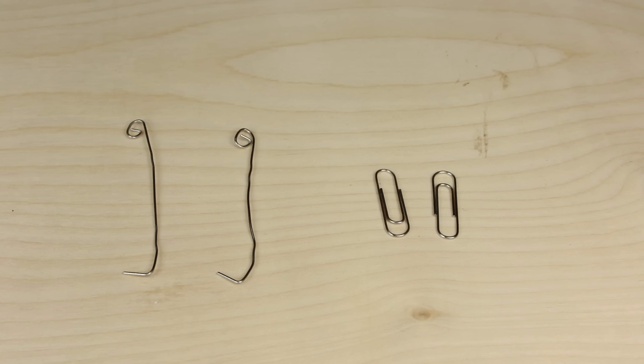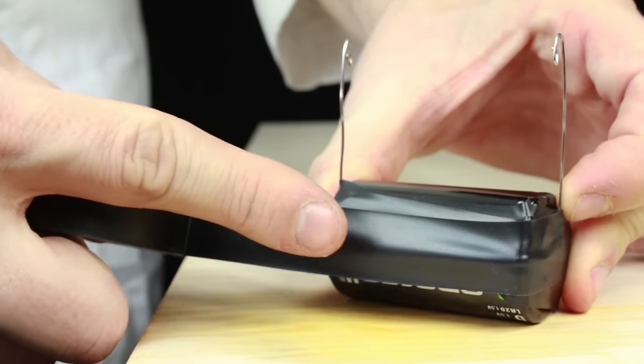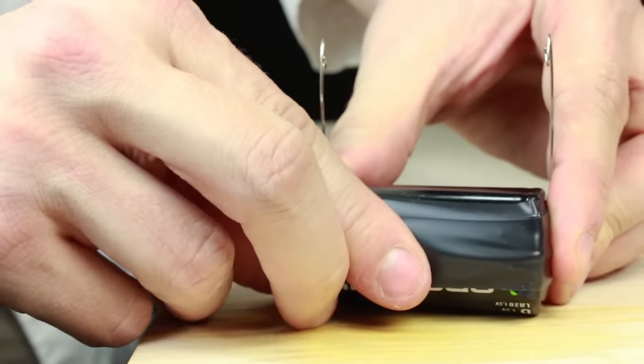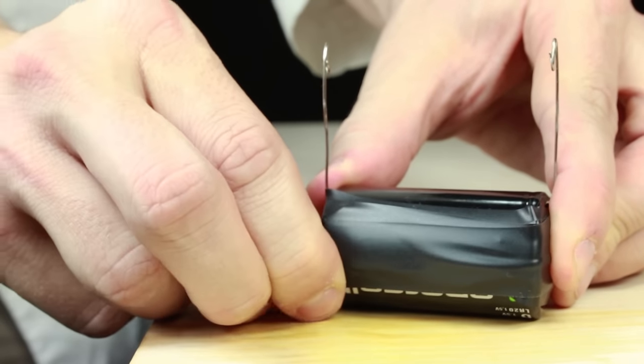Now take two paperclips and bend them into long hooks with loops of wire at the end. After that, use electrical tape to secure the two paperclips to the D battery. Make sure that the loops of wire are about the same height off the battery.